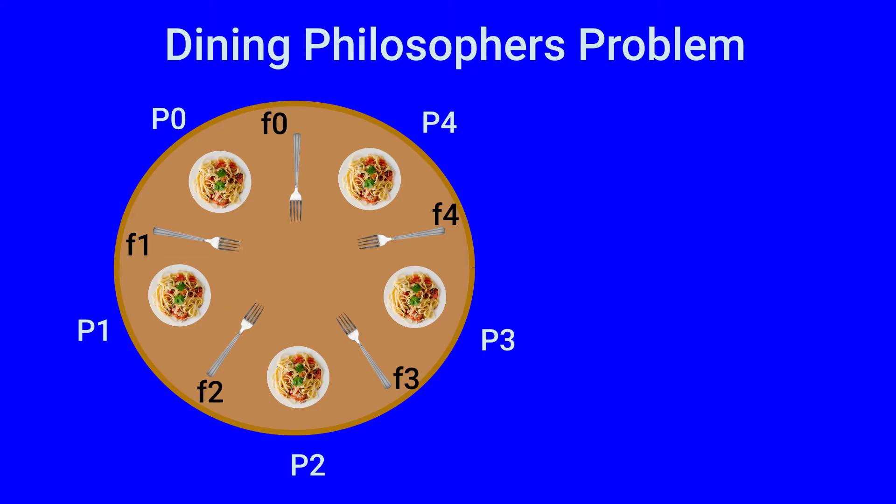The Dining Philosophers Problem is like this: five philosophers codenamed P0, P1, P2, P3, and P4 are seated counterclockwise on a circular dining table.